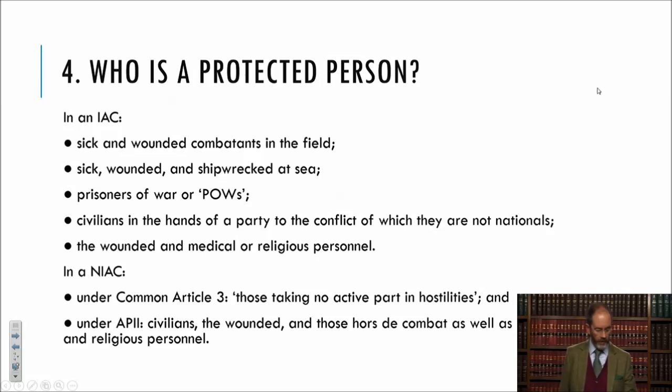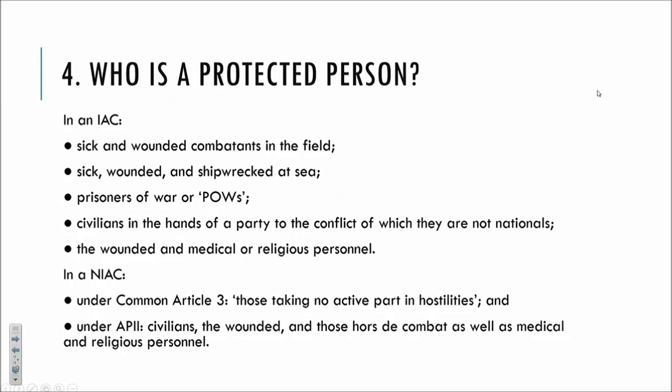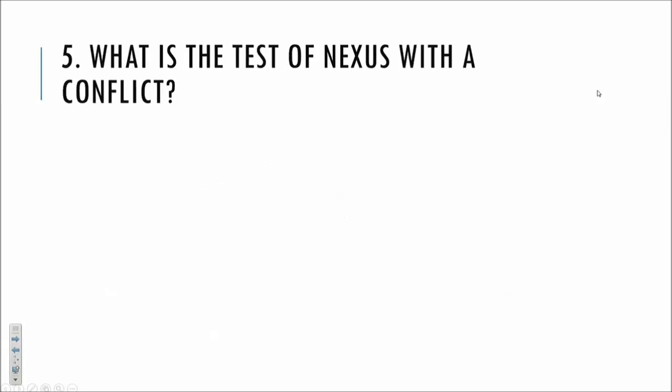War crimes can only be committed against protected persons. In an international armed conflict, that covers anyone under the four Geneva Conventions and Additional Protocol 1: sick and wounded combatants, sick, wounded and shipwrecked at sea, POWs, civilians in the hands of the party of which they are not nationals, and wounded, medical or religious personnel. In a non-international armed conflict, those protected fall under Common Article 3 — referring to those taking no active part in hostilities — and under Additional Protocol 2, protections apply to civilians, the wounded, those hors de combat (typically wounded combatants), and medical and religious personnel.